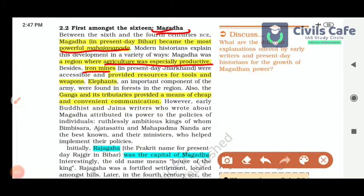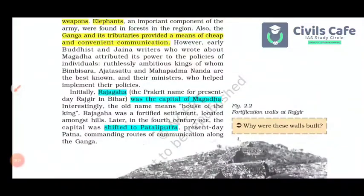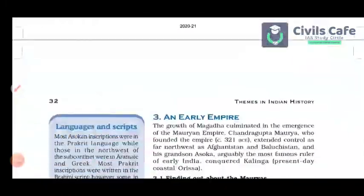Another factor was Magadha's closeness to iron mines — think of present-day Jharkhand — which provided resources for tools and weapons. Elephants, an important component of the army, were found in the forests of the region. Also, the Ganga and its tributaries provided cheap and convenient communication. Initially, Rajagriha (Rajgir) was the capital of Magadha; later the capital was shifted to Pataliputra.